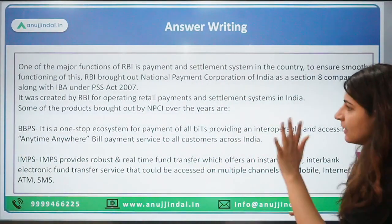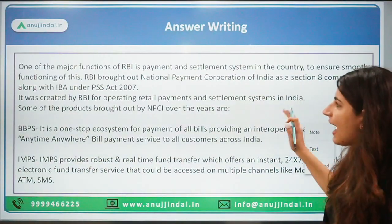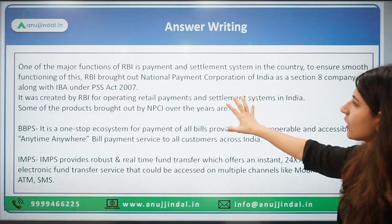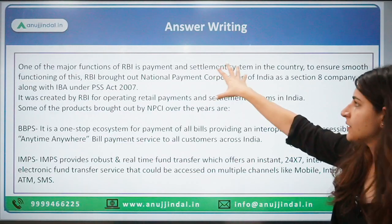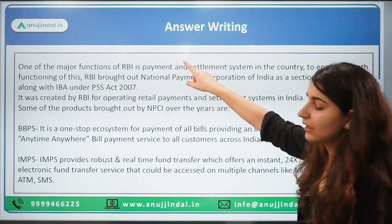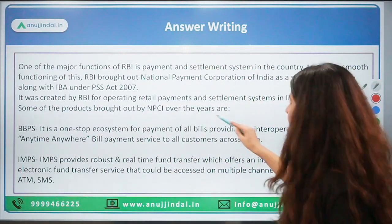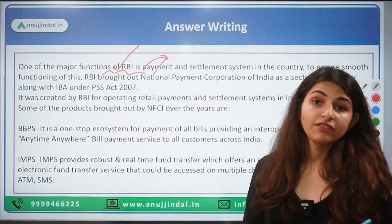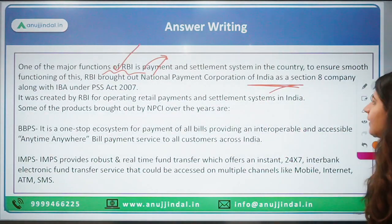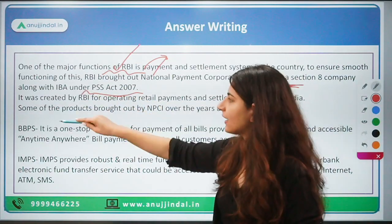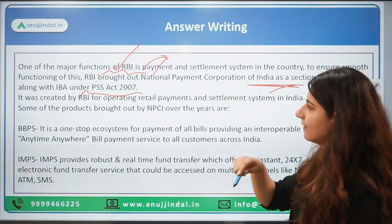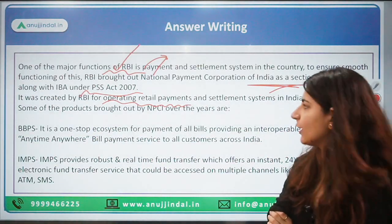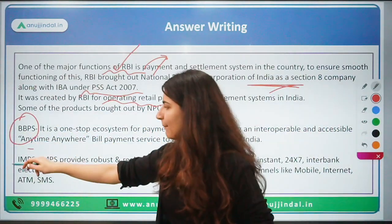A sample answer has been given, and I've taught you how to write: intro, body, conclusion — divide the answer with whatever knowledge you have. In the introduction, write about RBI's important function of payment and settlement system, and how to ensure smooth functioning, NPCI was brought out as a Section 8 company along with IBA under the PSS Act. Writing about RBI's function from its preamble will impress the exam checker. In the body, write about each product in one line each.